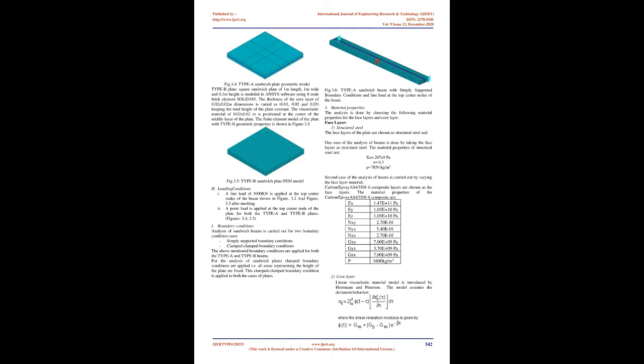The following assumptions are made for the present analysis: (A) there is perfect bonding between face layers and core; (B) loads are uniformly distributed throughout the layers; (C) fibers are uniformly distributed in the matrix; (D) fibers are perfectly aligned; (E) there is perfect bonding between fibers and matrix; (F) the composite lamina is free of voids and other irregularities; (G) all loads are within the elastic limit; (H) the plane cross-section remains plane during and after loading; (I) the stress and strain relations are linear.